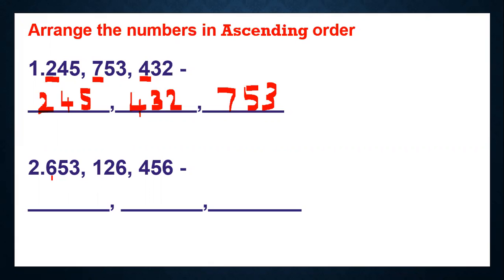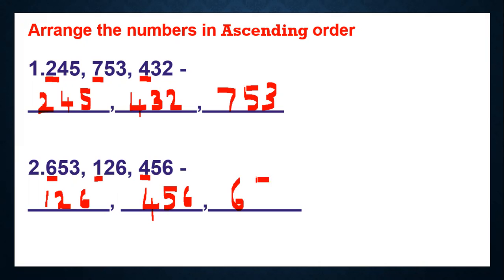Now let's see another one. Here we have 653, 126, and 456. We'll look at the digits in the hundreds place and underline them. Which one is the smallest? 1 is the smallest, so 126 comes first. Next smallest is 4, so 456 is next. Then we have 653. So we arrange: 126, 456, and 653 — from small number to big number, or in ascending order.